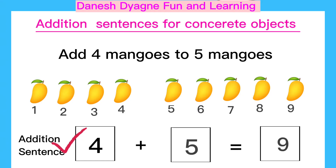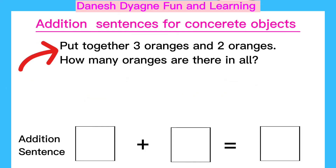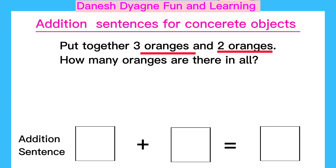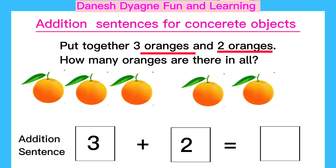Put together three oranges and two oranges. How many oranges are there in all? We write here three and here is two. We have here three oranges and another two oranges.